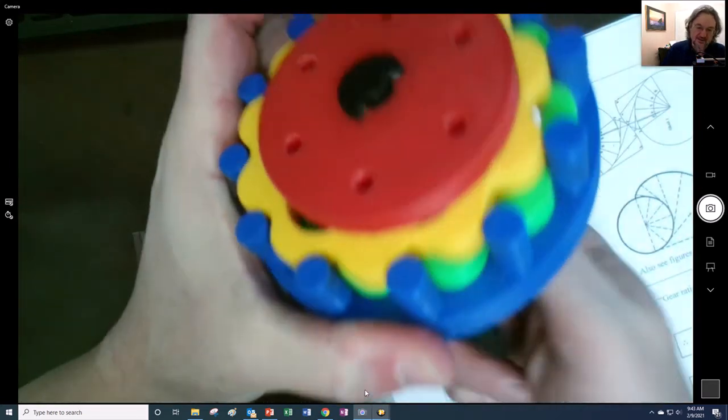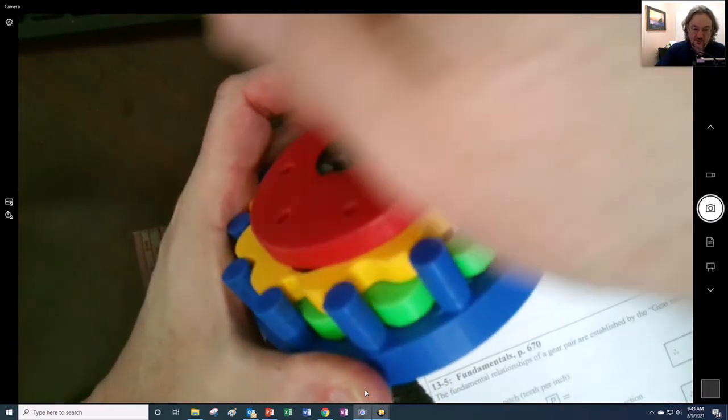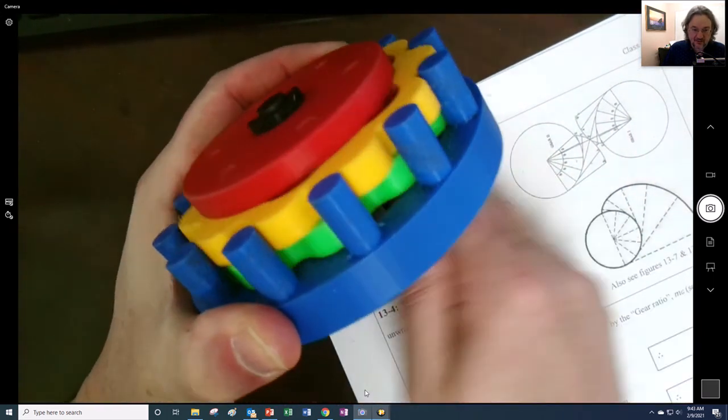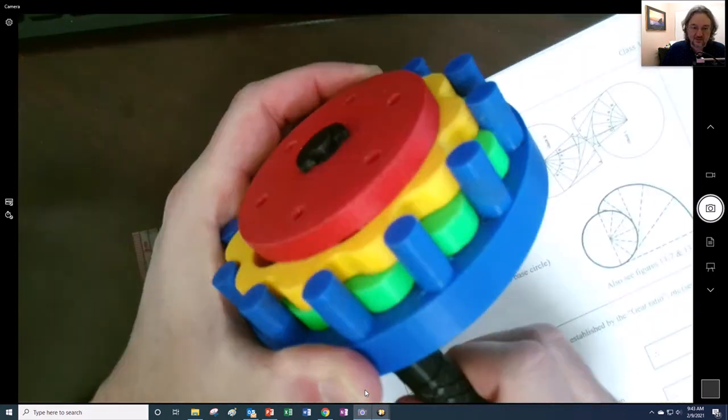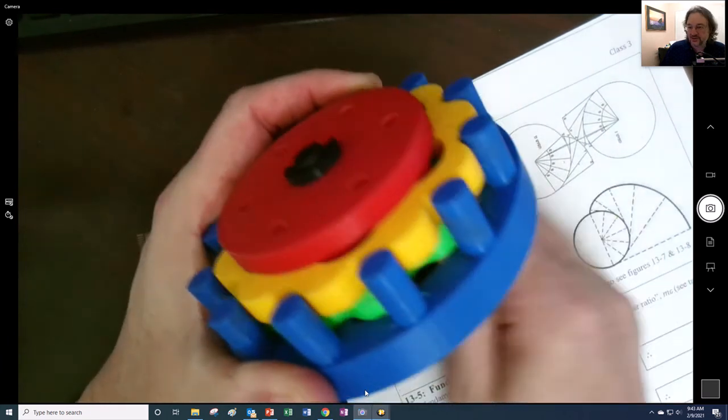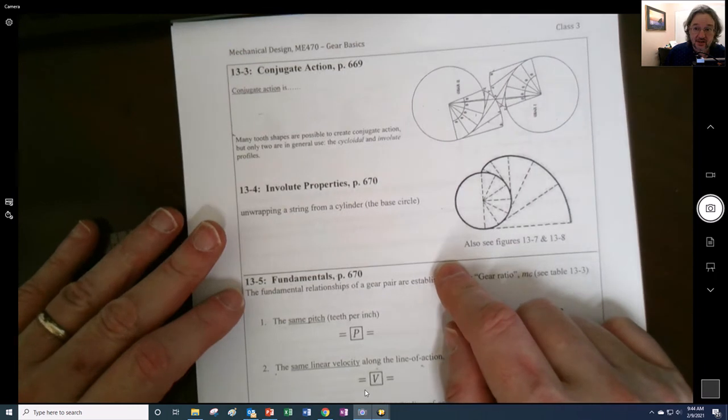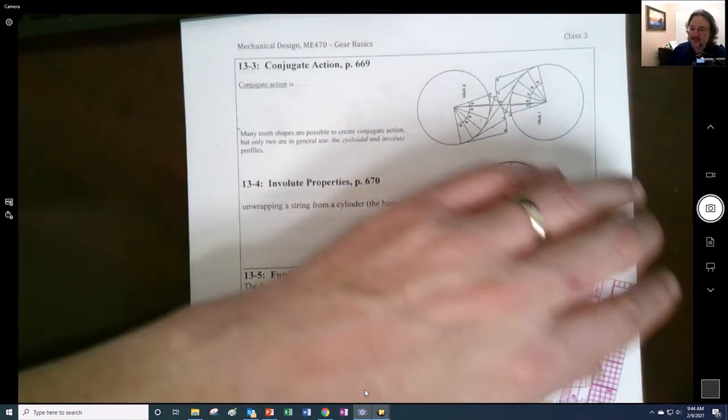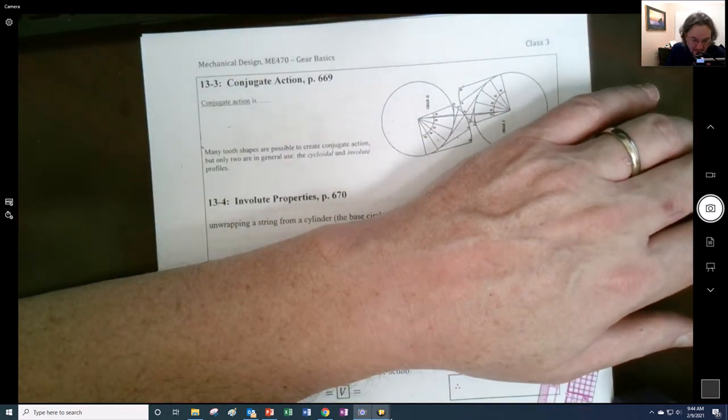So that right there, the change in there is the thing that makes that possible to get it to turn with conjugate action. So now we have a smooth rotational transference. Like if this is a constant velocity rotation input right here, this is a constant velocity output. And there's also, this is reversing the direction, which is actually something that happens in gears. So that's an interesting thing right there. The involute profile. So maybe I'll make that as just a short video and then move on to the next part of it.